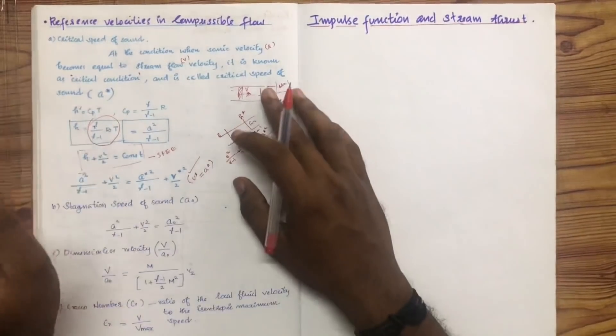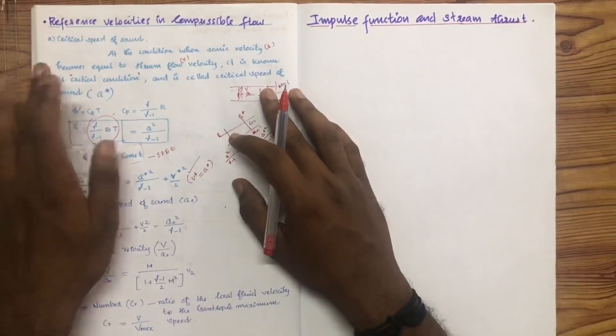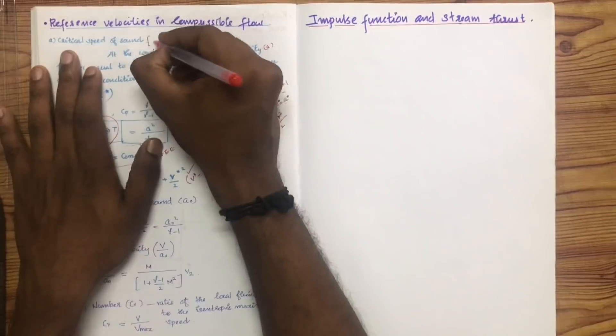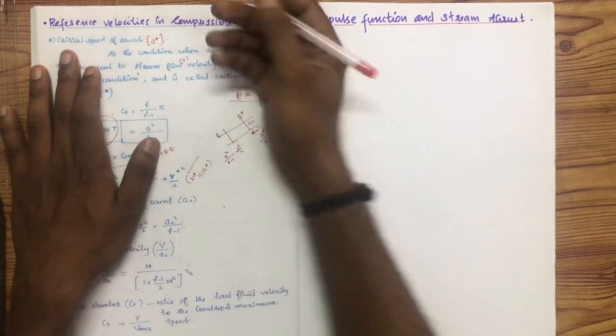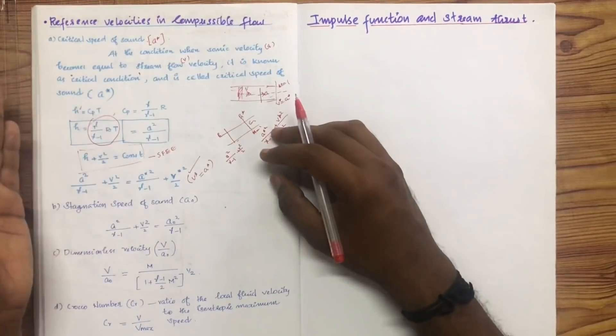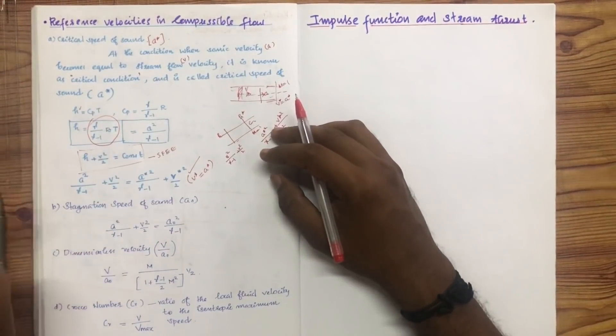A-star is the critical speed of sound, and it serves as the reference speed for compressible flow calculations.